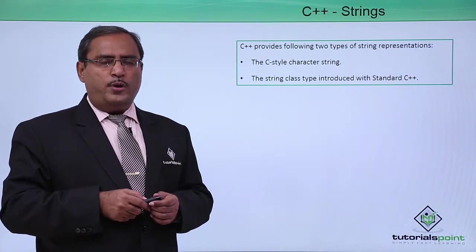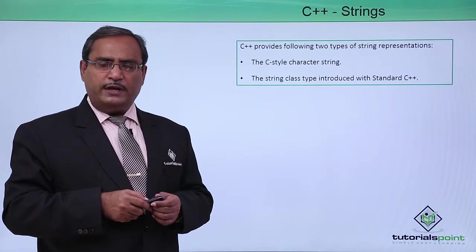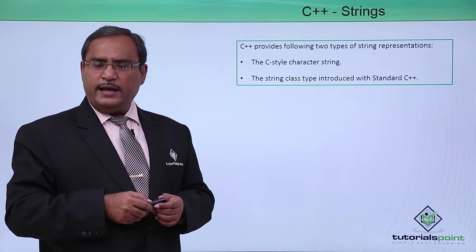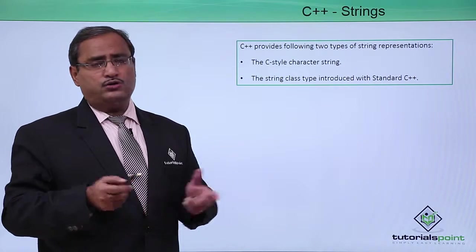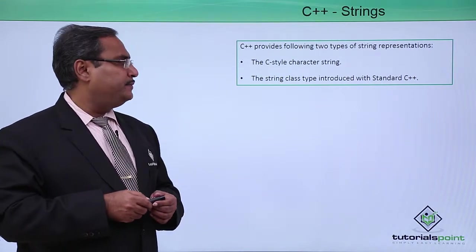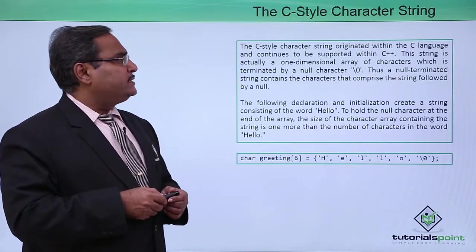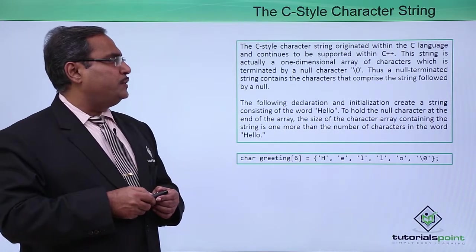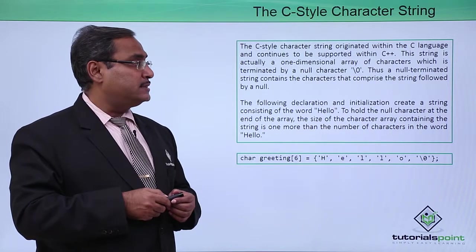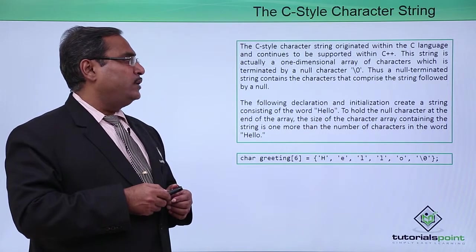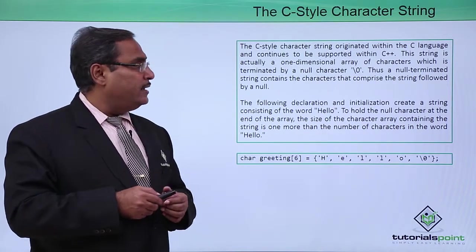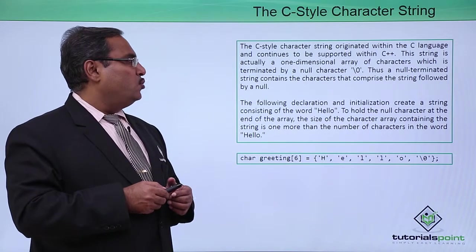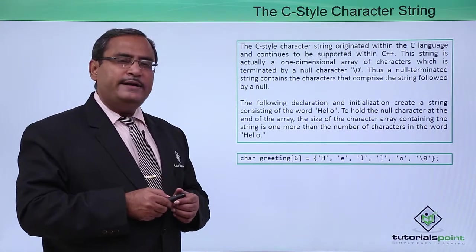We know that in a string, we can keep alphanumeric values or alphanumeric characters and also some special characters. The C-style character string originated within the C language and continues to be supported within C++. This string is actually one-dimensional array of characters which is terminated by a null character.